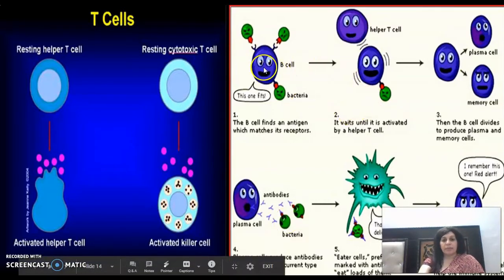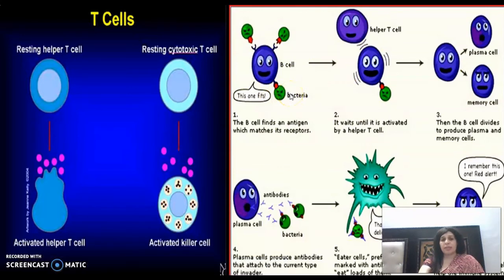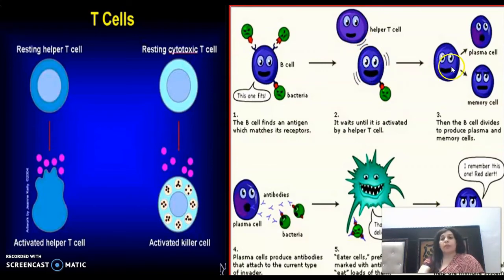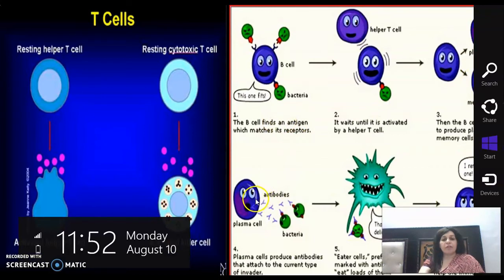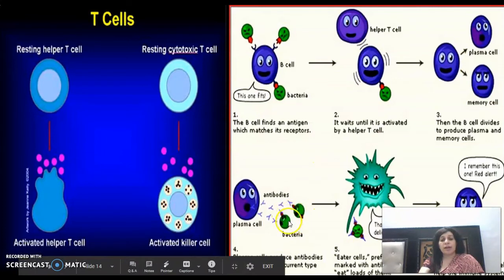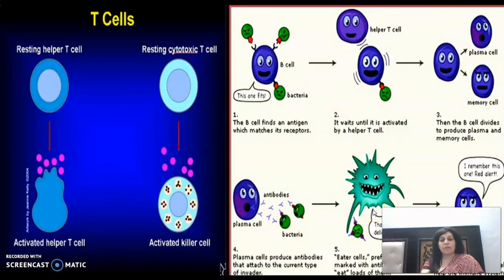जब bacteria (antigen) आता है, B cells की antigen receptors bacteria receptors से attach हो जाती हैं। फिर B cells helper T cells का wait करते हैं जो उन्हें activate करें। इसके बाद B cells divide होकर plasma cells और memory cells बनाते हैं। Plasma cells तेजी से antibodies बनाते हैं जो bacteria से attach हो जाती हैं, और फिर phagocytic cells उन antibody-attached bacteria को eat कर लेते हैं।